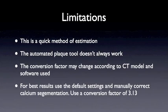Now there are limitations to this approach. What I'm presenting here is just a very quick and dirty method of estimating the calcium score. The automated plaque tool doesn't always work, and this conversion factor can definitely be contingent on the software that you use. For the most accurate measurements, you should keep everything at the default setting and manually adjust the calcium detection contours. You can then use a conversion factor of 3.13.